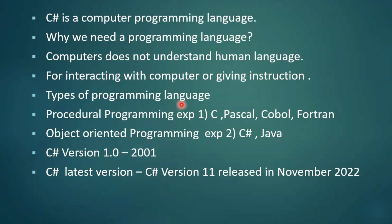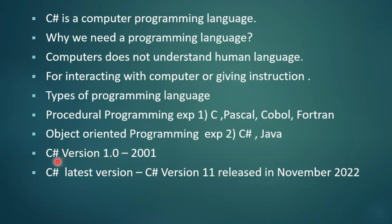In procedural programming language, the examples are C, Pascal, COBOL, and FORTRAN. Object-oriented programming language examples are C# and Java. C# was introduced in 2001 and the version was 1.0. The latest version of C# is C# 11, released in November 2022.